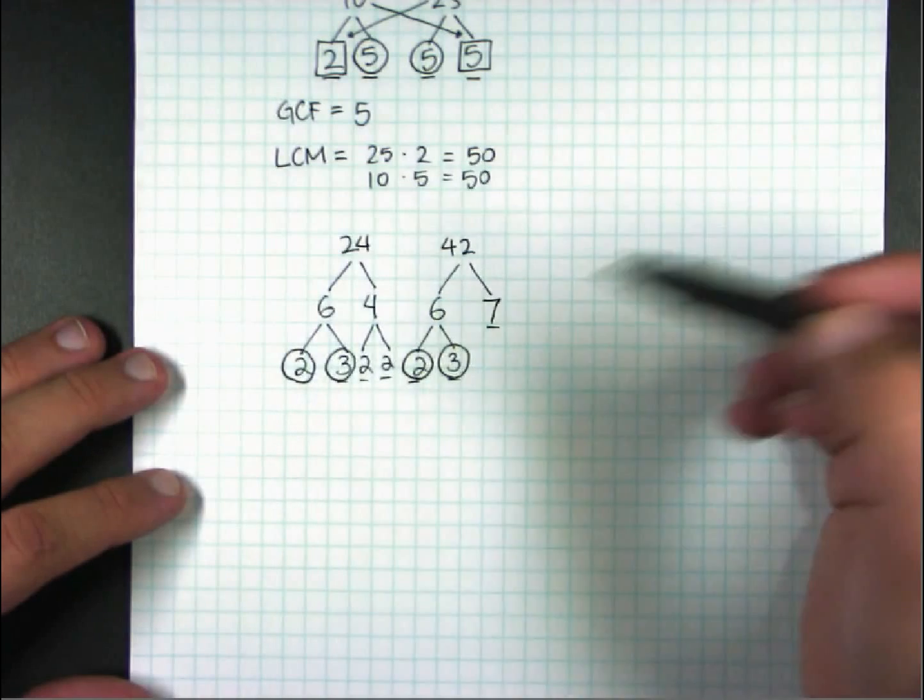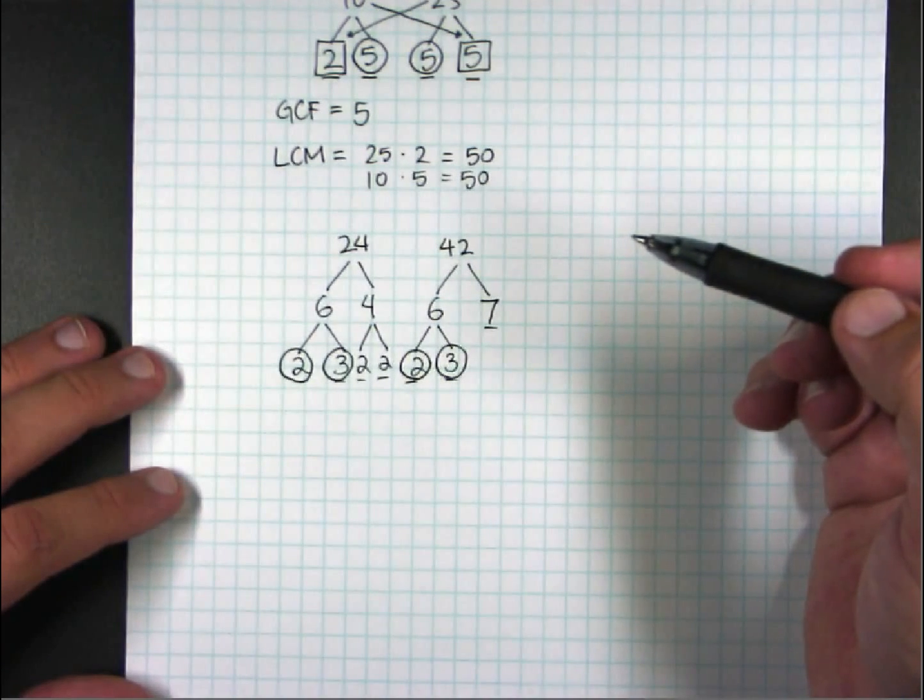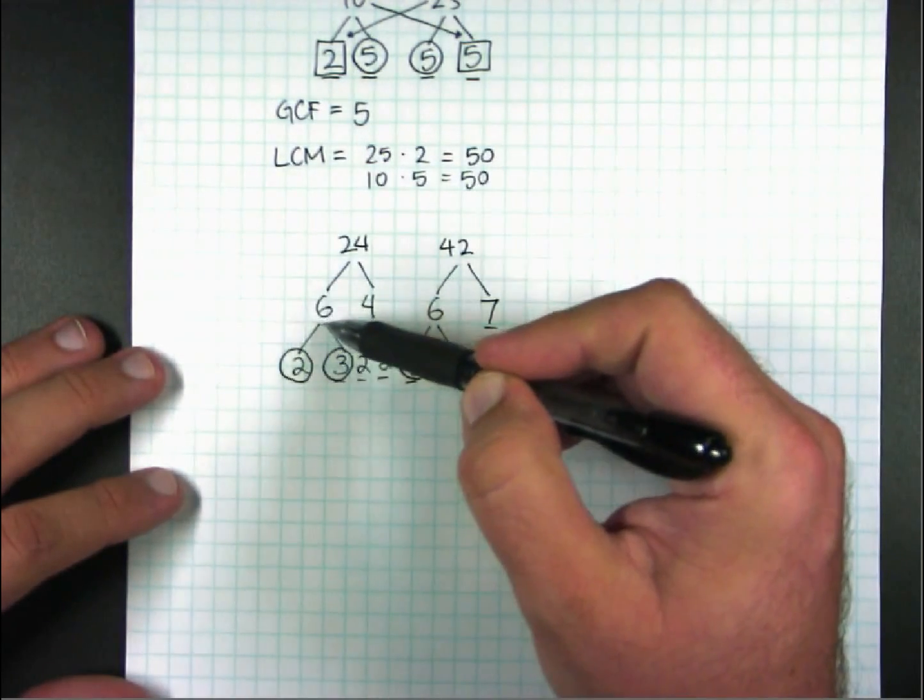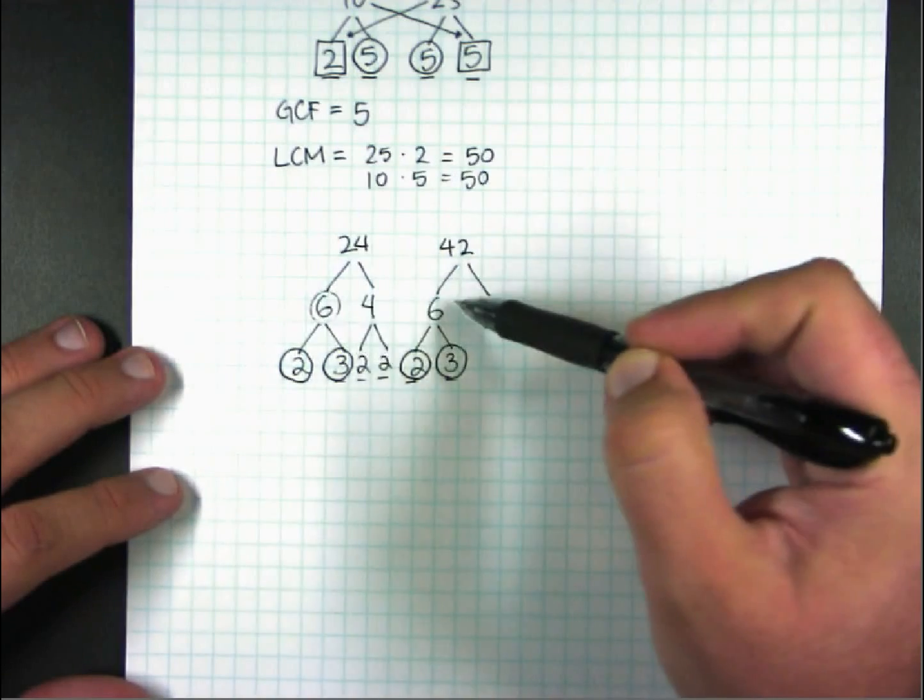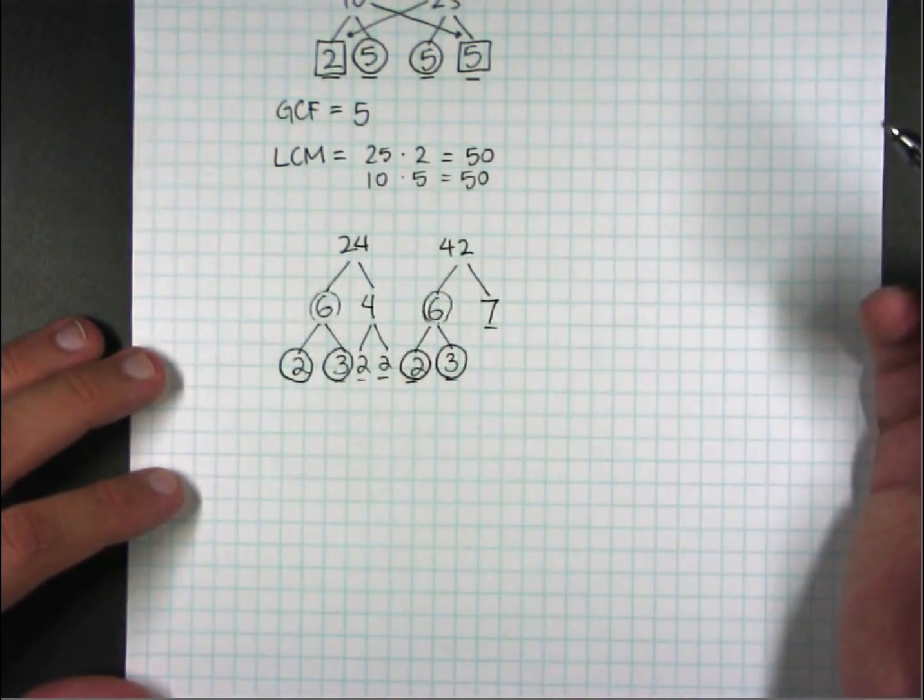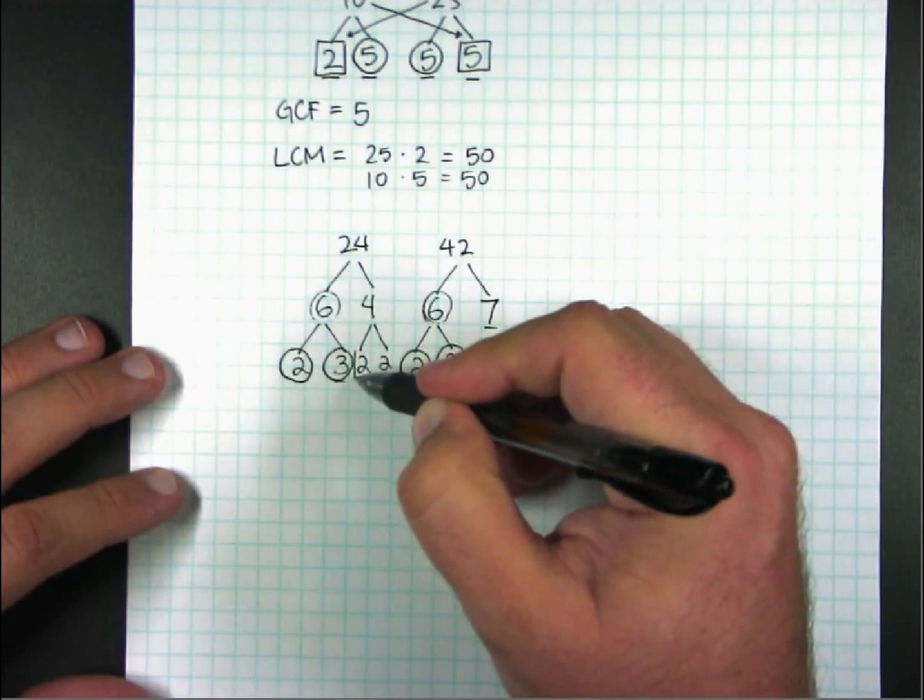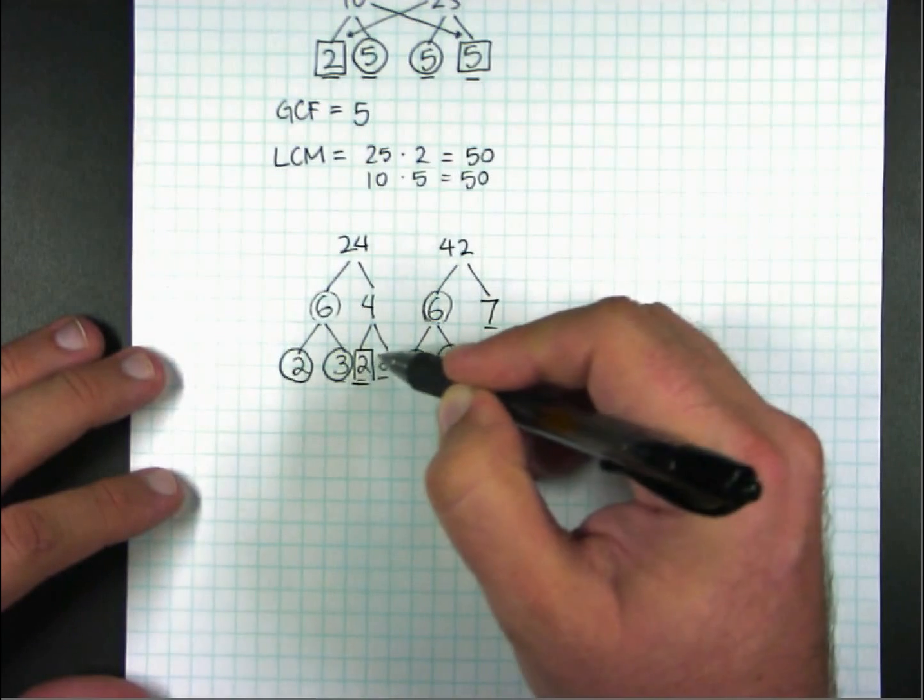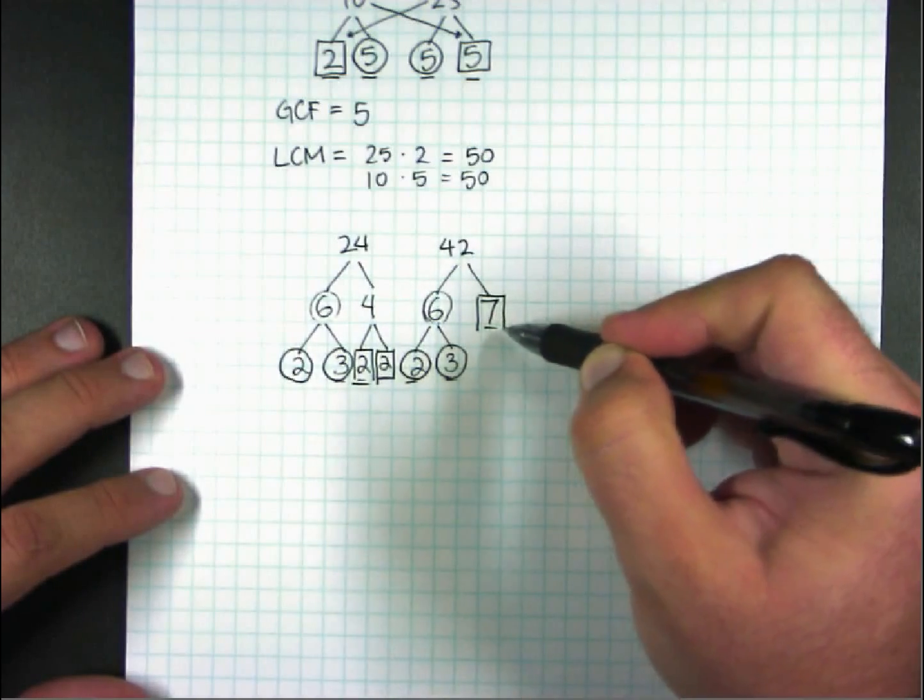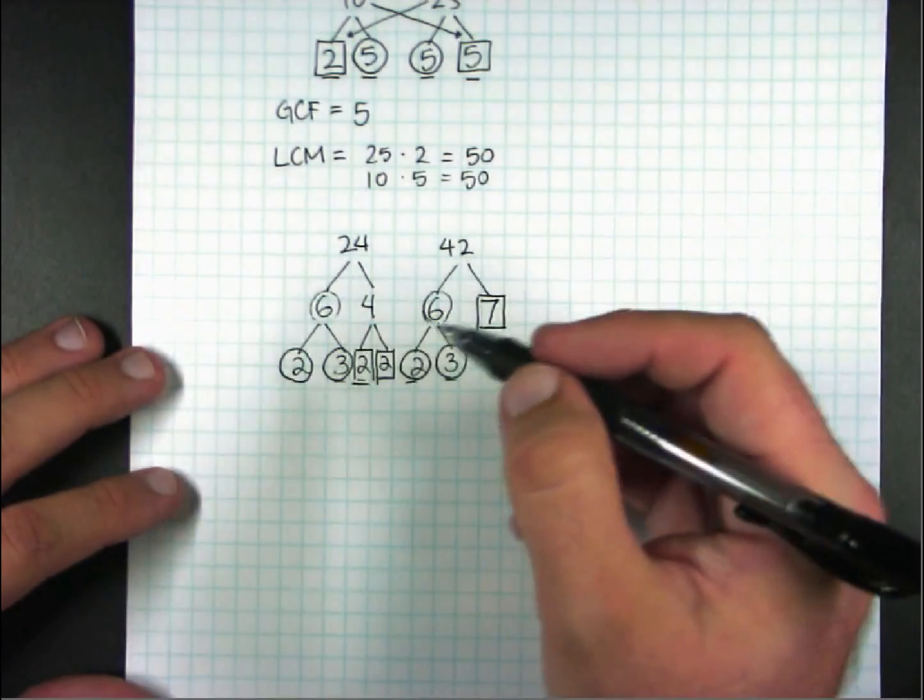And I wrote these as primes because that's what the procedure tells me to do. But in reality, those of you who saw, I could have stopped at 6. Because I could see there that they're already shared. And there wasn't really any need to take it any further. Whichever you prefer, I suppose. Now, there are two twos over here that are not used. And there's a seven over here that's not used. So, I boxed those.